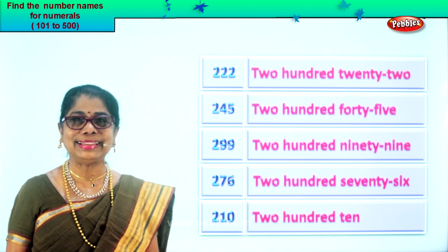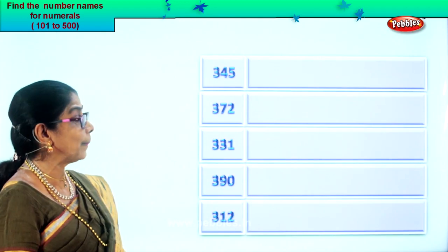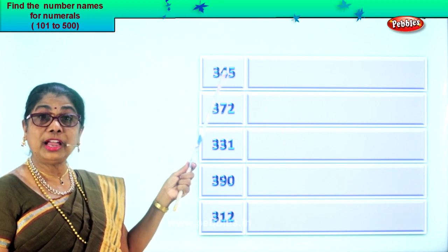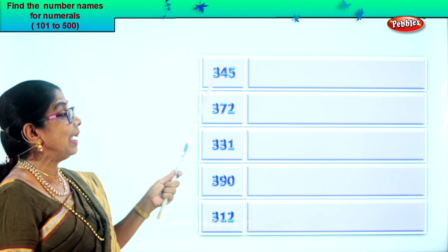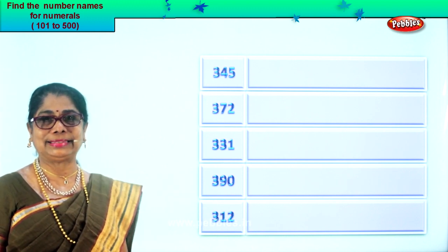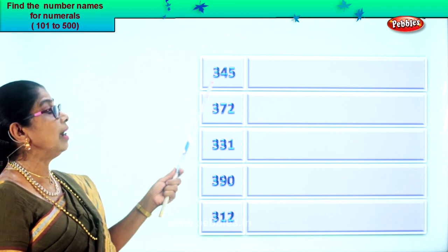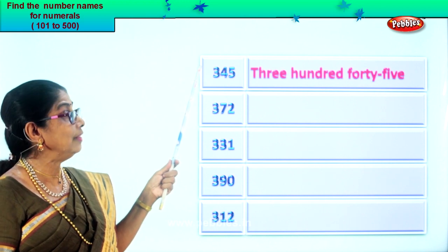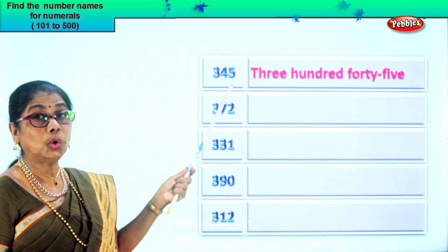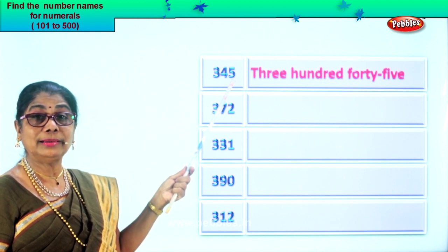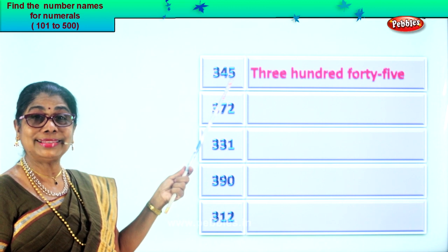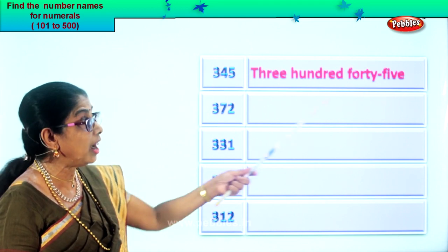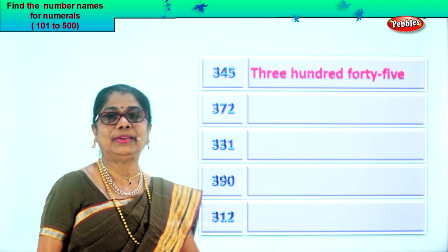Shall we go to another exercise? Look at the numeral given to you. First one: you have five — three, four, five — five in the ones place, four in the tens, and three in the hundreds place. Three hundred forty-five. So first we write three hundred, then we write forty-five. All you need to know is the spelling of hundred and then the tens.